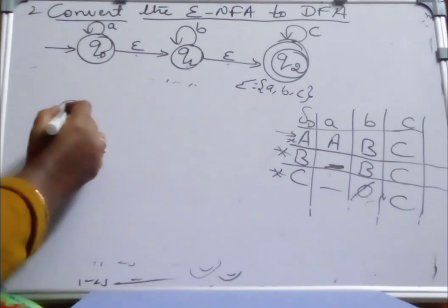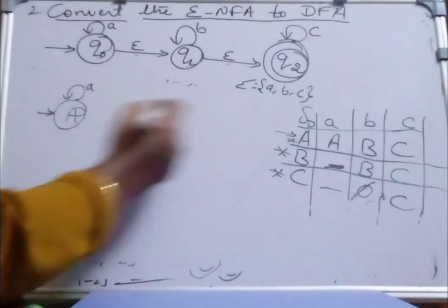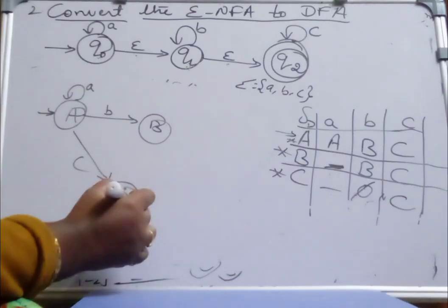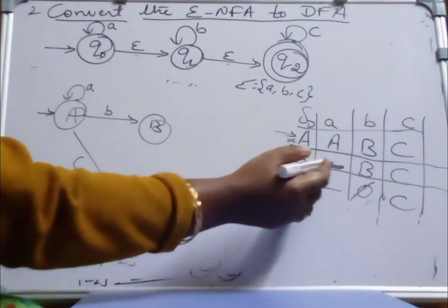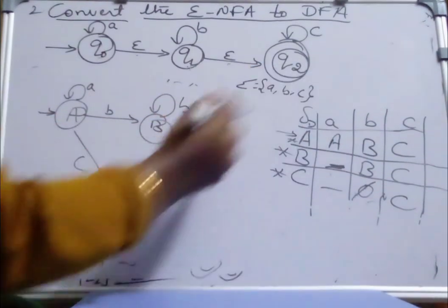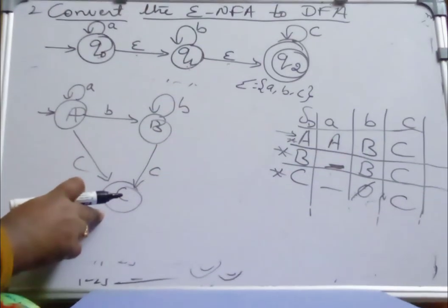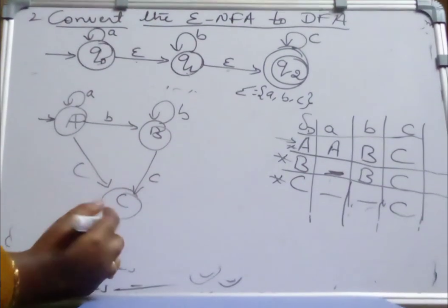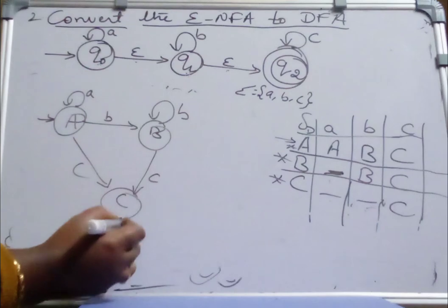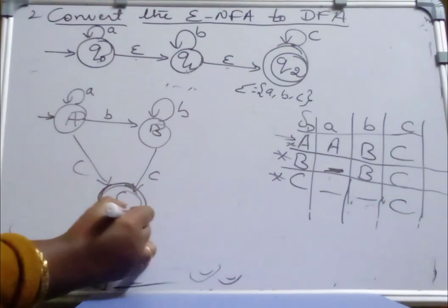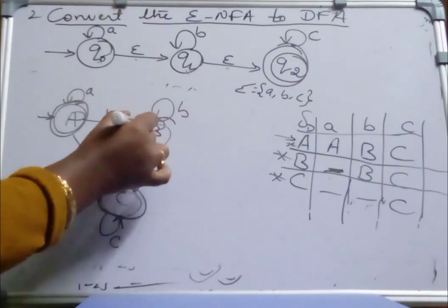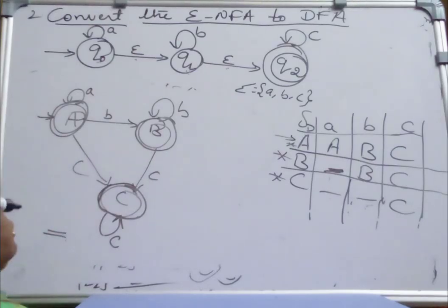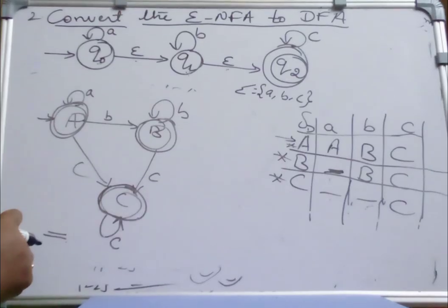Now write the transition graph. State A: on a it goes to A itself (self-loop); on b it goes to B; on c it goes to state C. State B: on a we don't have a transition; on b it is a self-loop; on c it is moving to state C. State C: on a it is null; on b it is null; on c it is C itself (self-loop). Since Q2 is present in all three states, all three states A, B, and C are our final states. We have now converted the NFA to equivalent DFA. Hope you have understood — please don't forget to subscribe, like and share. Thank you.